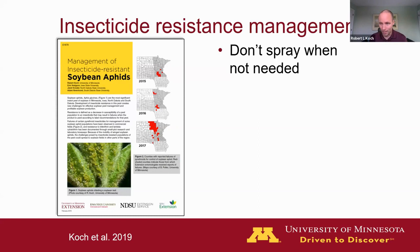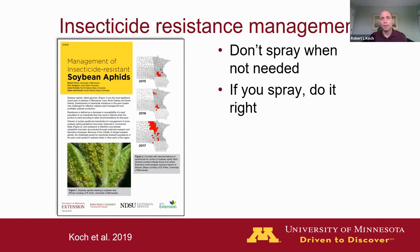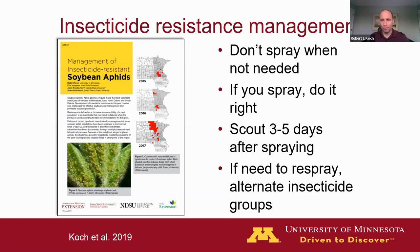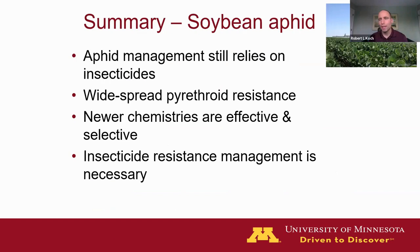Because of that, we need to keep insecticide resistance management in mind to preserve these remaining effective insecticides. That means only spraying when needed, which comes down to scouting fields, estimating aphids on plants spread throughout the field, and relating that to the economic threshold. We still recommend 250 aphids per plant as the trigger point for spraying. If you spray, do it right — pay attention to rates, volumes, and nozzles. Scout after an application to confirm the insecticide worked, and if there's a failure requiring retreatment, alternate to a different insecticide group.